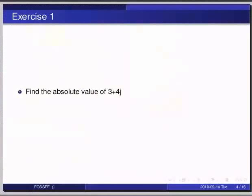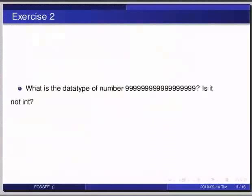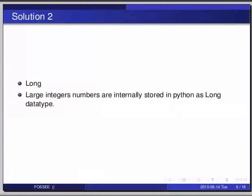Let us do one more exercise. Pause the video here and try out the following: what is the data type of the number 2 raised to 9, that is 9 repeated up to 20 — is it an integer? The solution is: the data type of this number is long, so it is an integer, but big integers are internally stored in Python as the long data type.